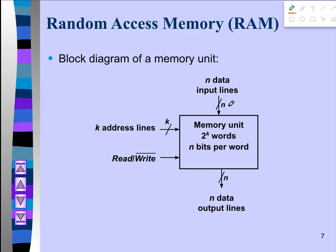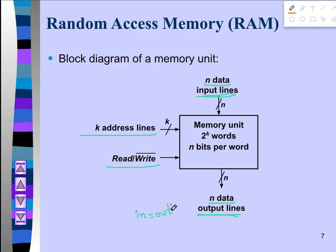In a memory unit block diagram, there are some fundamental components you need to show: the number of input lines, output lines, the read/write signal, and the address lines. If you have n number of input lines, then you will have n number of output lines — the input lines and output lines should be equal. There is also a read/write signal, and depending upon the user operation those signals are activated.